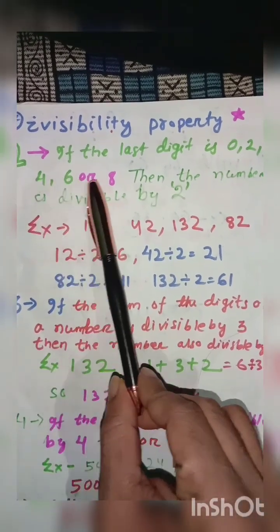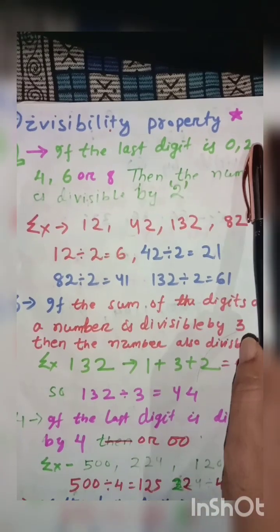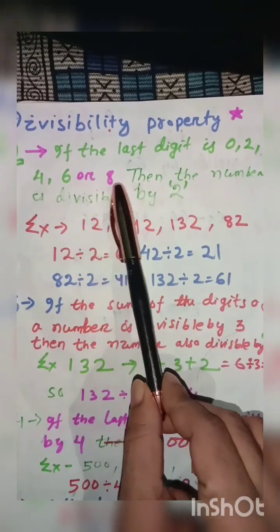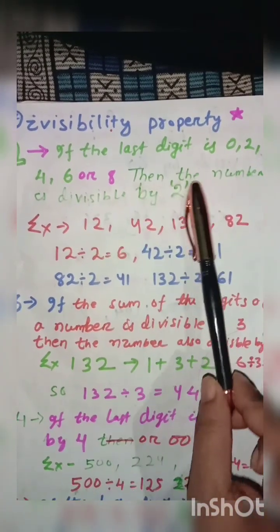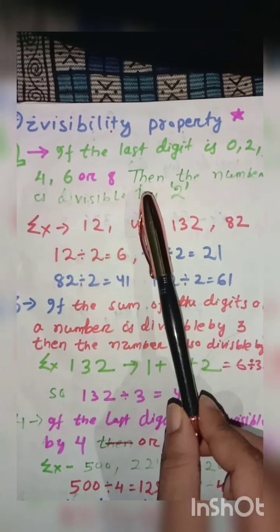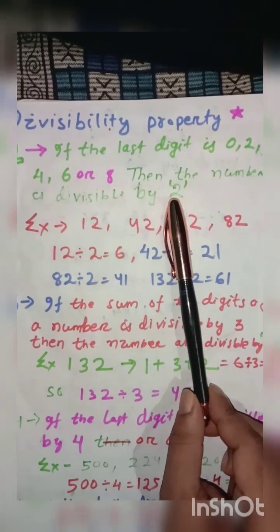When the number has 0, 2, 4, 6, or 8 in its units place, then the number is divisible by 2 compulsorily.